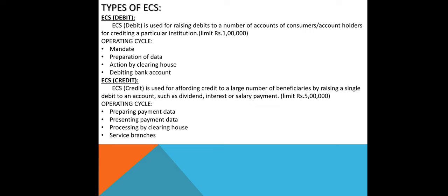The ECS debit operating cycle involves mandate preparation, data action by the clearing house, and debiting the bank, with a limit of 1 lakh. ECS credit is used for affording credit to a large number of beneficiaries by raising a single debit to an account, such as dividend, interest, or salary payments, with a limit of 5 lakhs. The operating cycle involves preparation of payment data, presenting payment data, and processing by the clearing house and service branches.